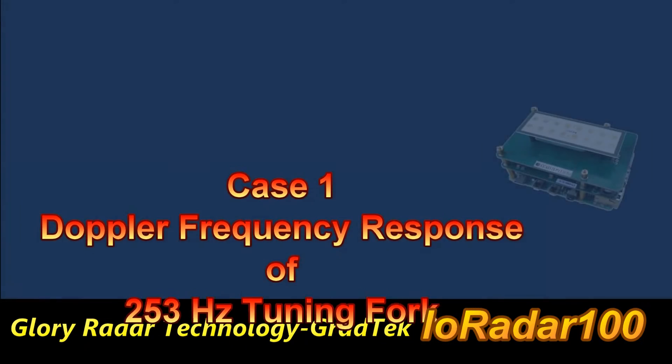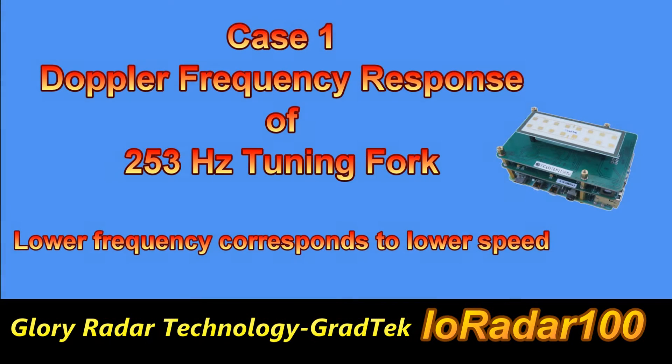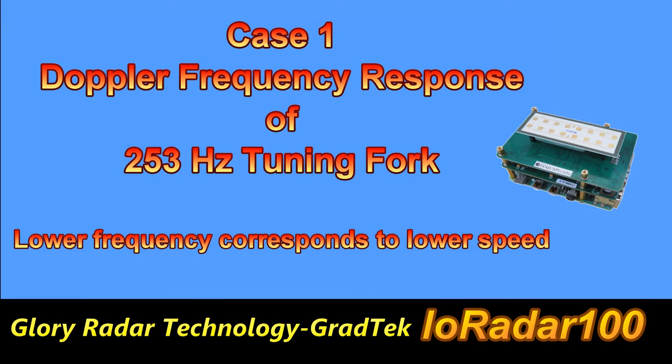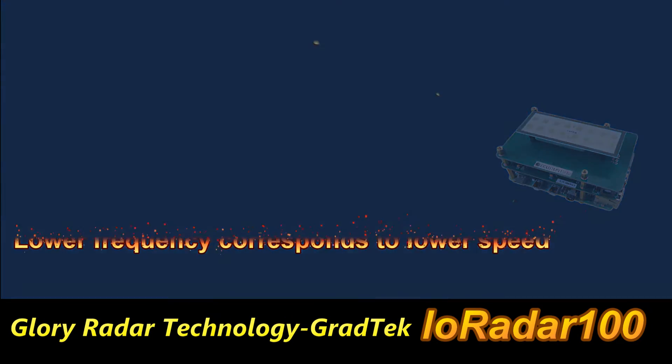Case 1: Doppler frequency responsive 253 Hz tuning fork. Lower frequency corresponds to lower speed.